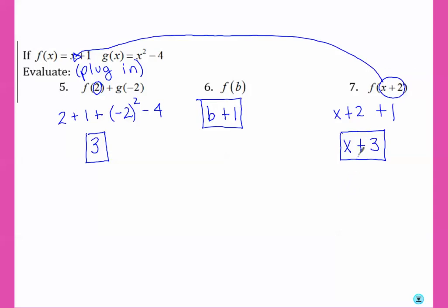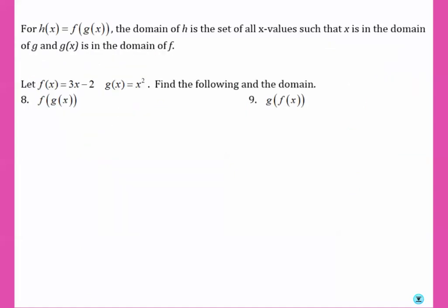Number 7 is basically an example of a composition, which is what we're going to work on next. For h of x to equal f of g of x, the domain of h is the set of all values such that x is in the domain of g, and g of x is in the domain of f. I'll show you what that means when we get to the end of these problems.